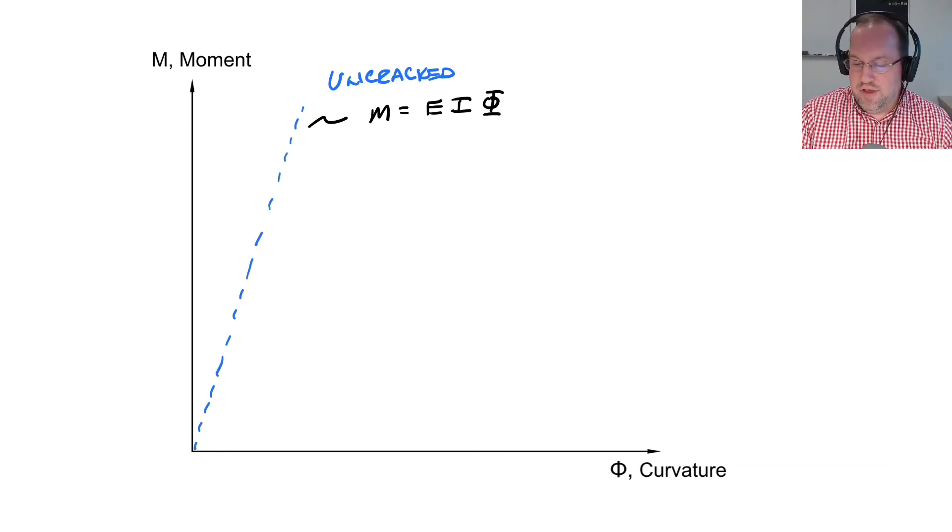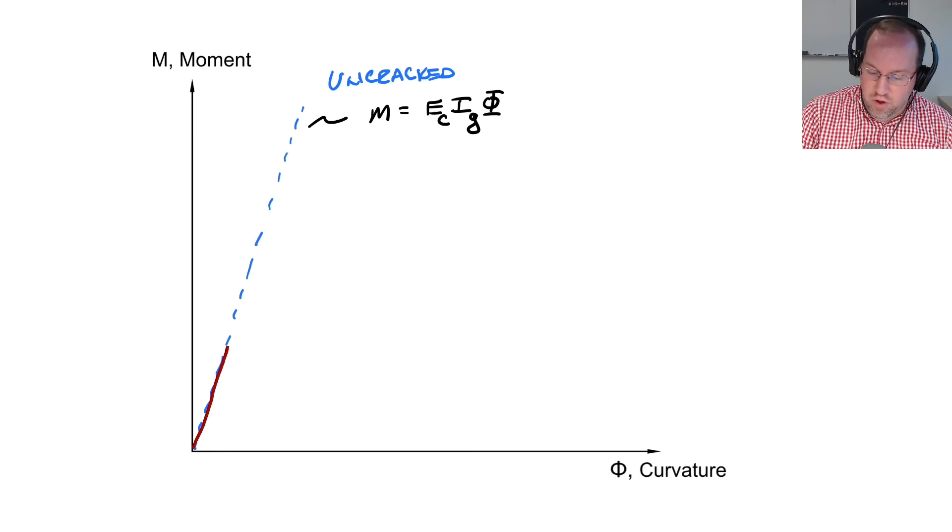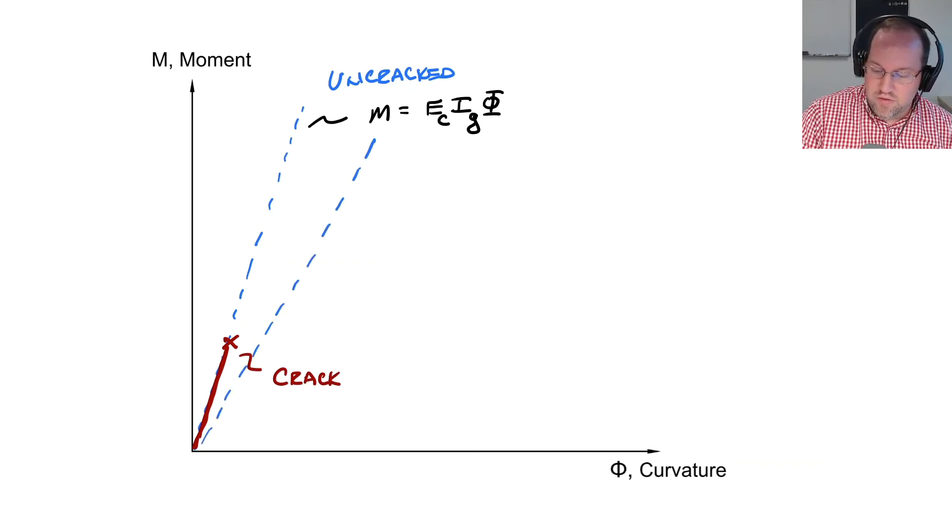Now the E that we're using here is the modulus of our concrete so we'll call that E sub C and the I moment of inertia is I gross so that's I sub G and that describes the moment of inertia of an uncracked section. Now obviously this section is going to crack so as I increase my load at some point my tensile stress in my concrete will hit my modulus of rupture which is effectively the cracking stress of concrete. So at this point I crack and now I'm going to transition to a new curve with a shallower slope so we'll draw a second curve right here and this is going to be my cracked curve here.